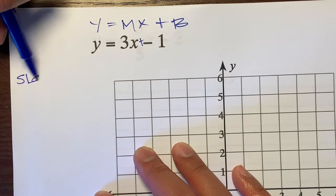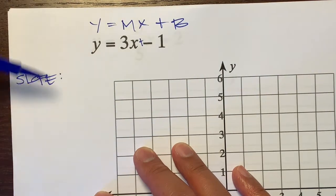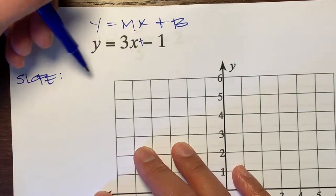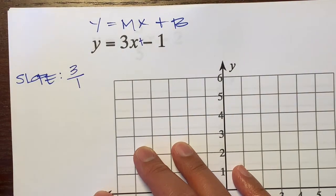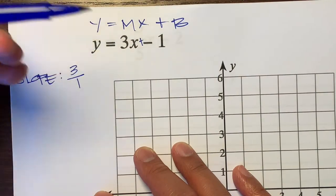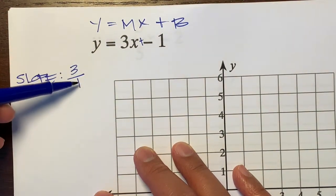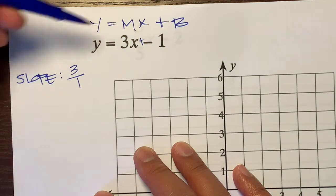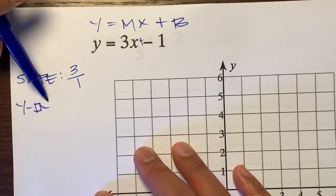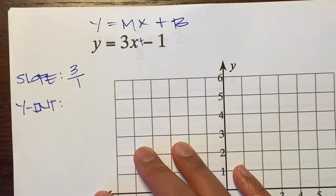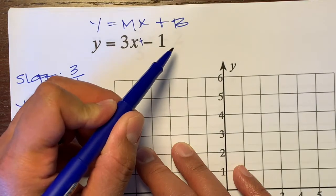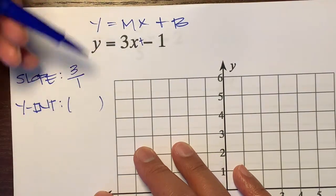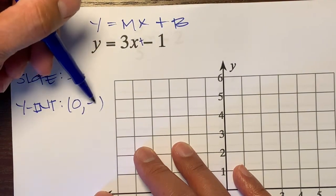Typically in these equations, Y and X stay as variables, while M and B will be numbers. We need to identify our slope and our starting point. The slope, represented by M, is 3 — and I'm going to write it as a fraction, 3 over 1, because M represents rise over run. The invisible denominator under any whole number is 1.